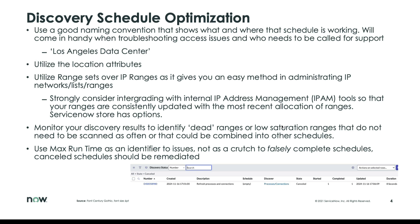What I always recommend is to put dead ranges all into a schedule that runs once a month. You scan what you understand as being nothing once a month, and if something pops in and more devices start appearing, you can bring that range into your weekly or daily schedules. Low-saturation ranges that don't need their own schedule can be grouped into another schedule so you don't have to wait for one schedule to complete before executing another. This makes everything more efficient — understanding how to best manage and maintain these ranges helps you be as efficient as possible within the time you have.